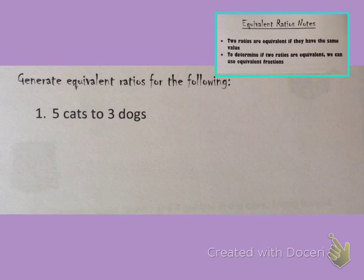We need to come up with an equivalent ratio to this. Like I just said, we're going to write all of the ratios as fractions. So let's do that first. 5 cats to 3 dogs. Now all we have to do is come up with an equivalent fraction, which is super easy.